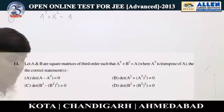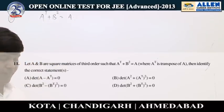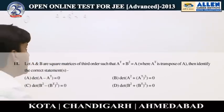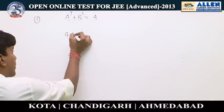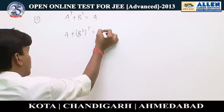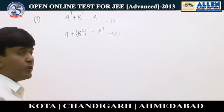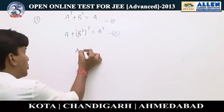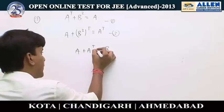In question number 11, A and B are square matrices of third order with A transpose plus B² equals A. Taking the transpose of both sides gives A plus B² transpose equals A transpose, labeled equation 2.